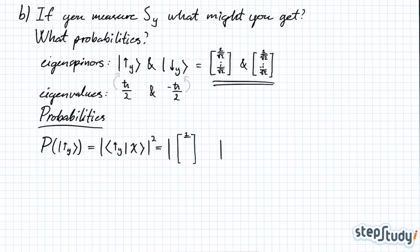Writing it out, we have to take the absolute square of the Hermitian conjugate of the spin up in the y-direction and the general state that has the coefficients alpha and beta. That in itself should give us the probability of measuring spin up in the y-direction.